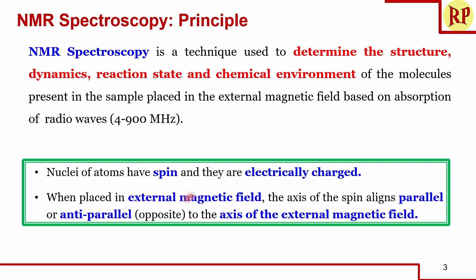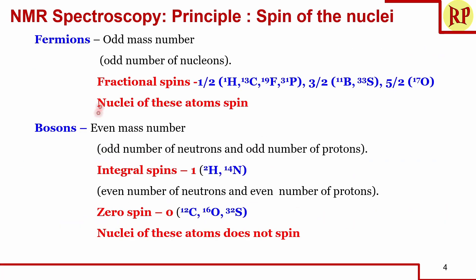The nuclei of atoms have a spin and they are electrically charged. When subjected to an external magnetic field, the axis of spin aligns parallel or anti-parallel to the axis of the external magnetic field. We have two types of nuclei: fermions and bosons. Fermions have an odd number of nucleons and have fractional spins — half, 3/2, or 5/2 — and show spin. Bosons have an even mass number with integral or zero spin, so they do not show spin. Only fermions can be used for NMR spectroscopy.